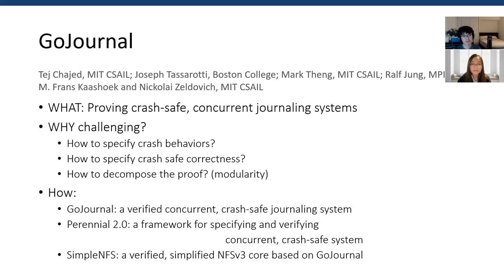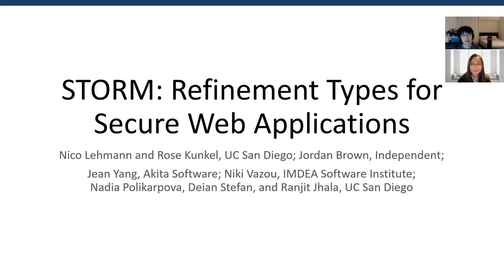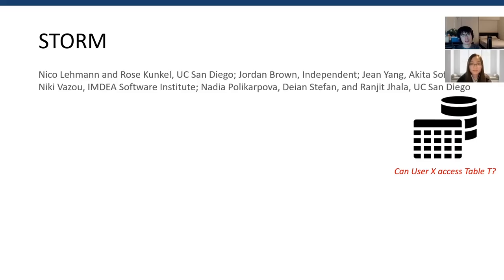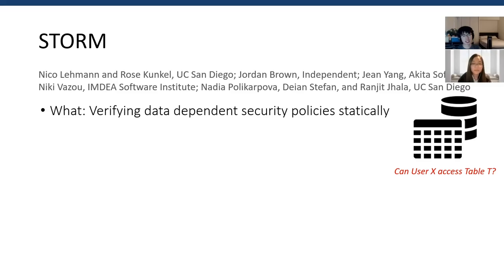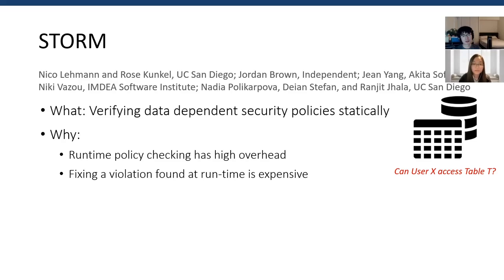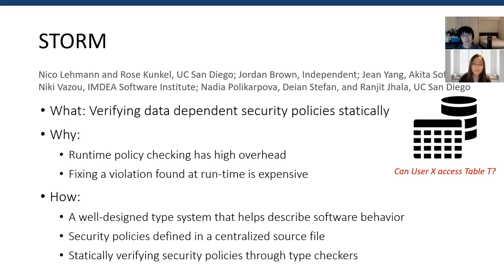Our third and last paper about verification is STORM: Refinement Types for Secure Web Applications, from IIT India and UC San Diego. In web applications, we don't want users to be able to see data they are not supposed to see — we need data-dependent security policies to ensure this. This paper verifies the policies at static time. Previous works have done this at runtime, but runtime checking introduces performance overhead, which is critical to web applications. Also, security violations found at runtime can be expensive to fix. This paper proposes a unique way that describes security policies as refinement-typed ORM models, so whether policy holes exist can be checked at static time with a type checker. Developers just need to specify the policy in a centralized source file.